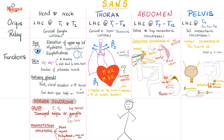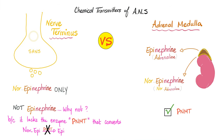Most of the secretions of the adrenal medulla is actually epinephrine, about 80%. What is the difference between postganglionic sympathetic fibers and your adrenal medulla? Big difference. The postganglionic sympathetic fibers can only release norepinephrine — never ever epinephrine. Why not? Because they lack the enzyme that converts norepinephrine to epinephrine.